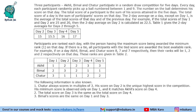They participate in a random draw competition for five days. Every day, each participant randomly picks a ball numbered between one and nine. The number on the ball determines his score on that day. The total score of a participant is the sum of his scores attained in the five days. The total score of a day is the sum of the participants' scores on that day. The two-day average on a day, except on day one, is the average of the total scores of that day and of the previous day.